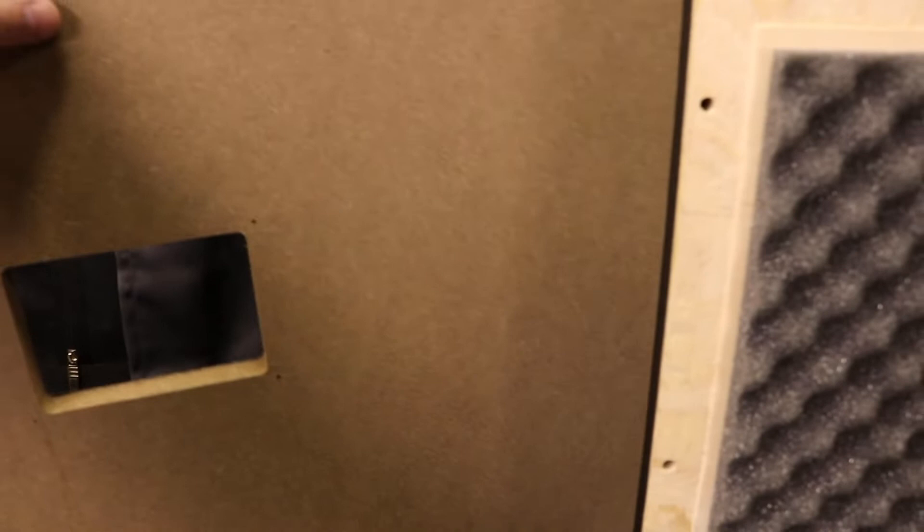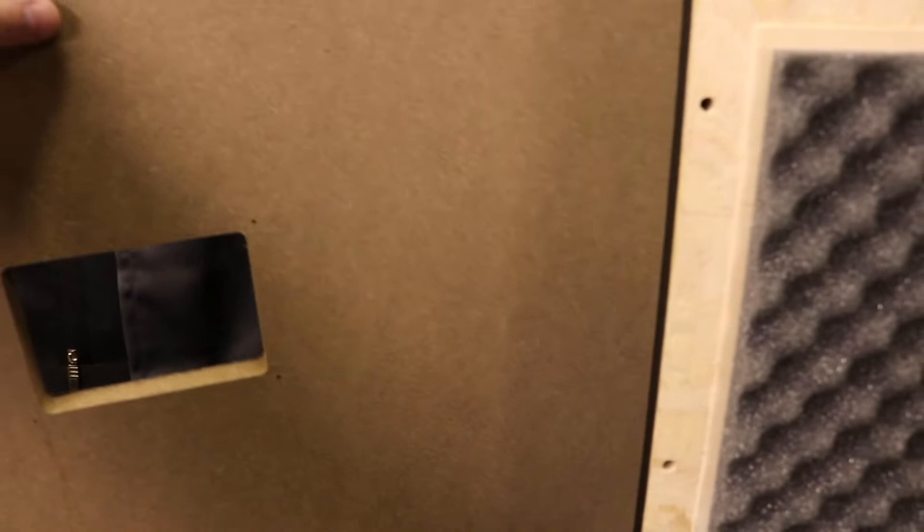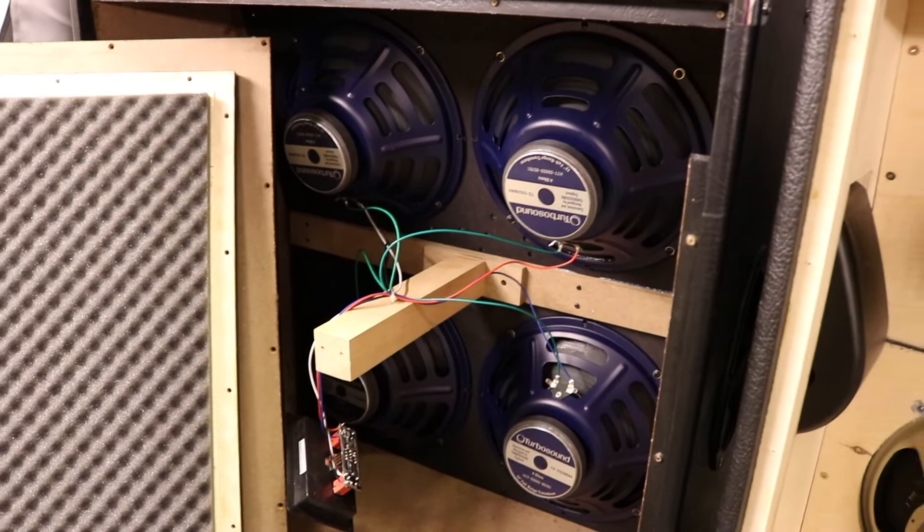Versus the other, the Bugera, the Bugera, you have nothing on the inside. And this is also MDF. So yeah, that's what it is. So now you know what it looks like on the inside.